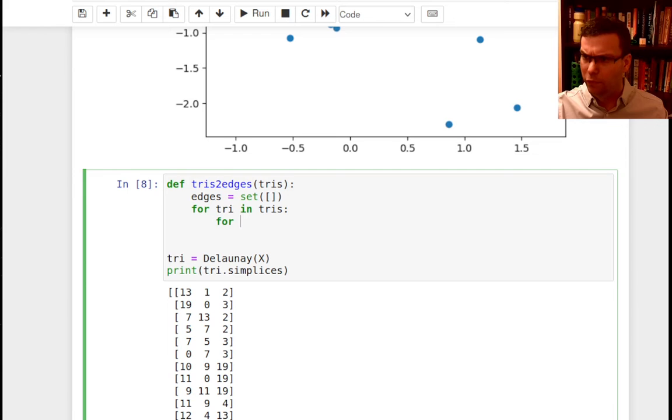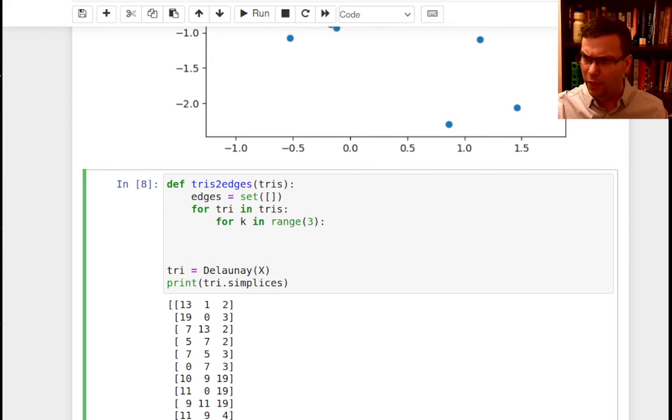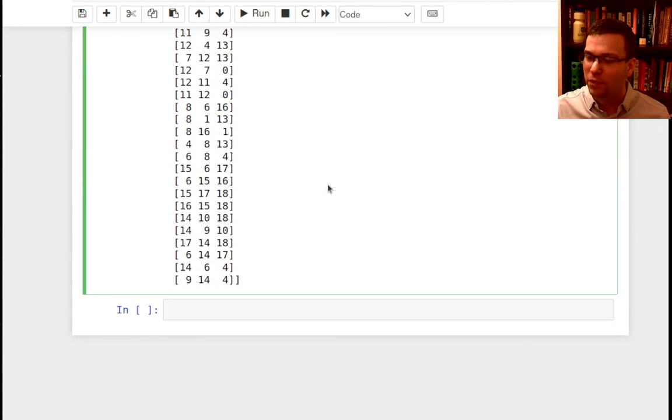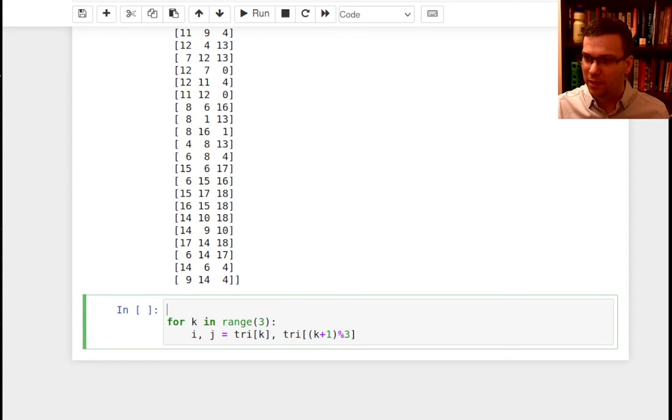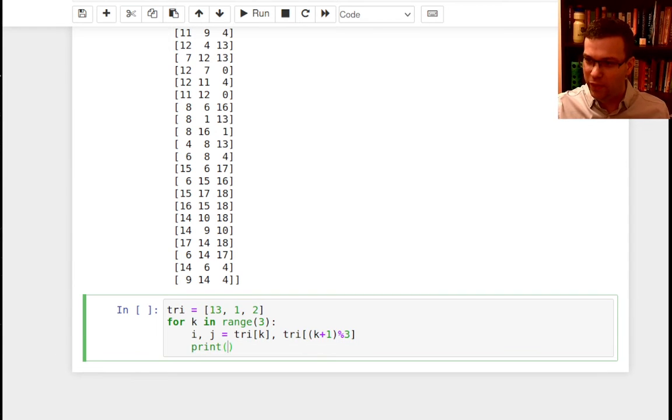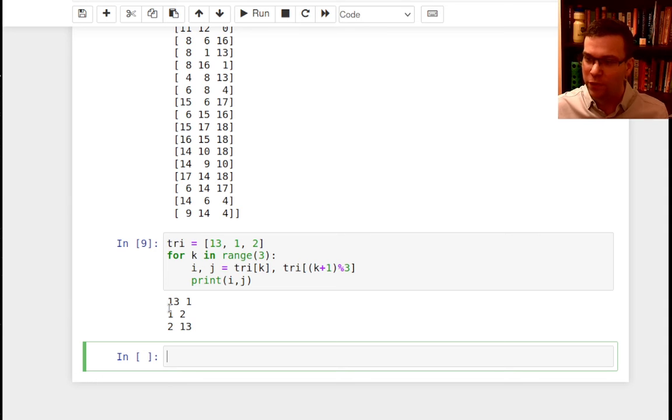And then I'll say i, j, is equal to try index k. This is going to look a little weird. Try index k plus 1 mod 3. So let me show you what this does really quick on just a single triangle. So let's say I had this triangle 13, 1, 2. So if I print out what that gives me, that's going to give me 13, 1, 1, 2, and 2, 13. So there are three edges in a triangle that I want to consider, and those are the three.